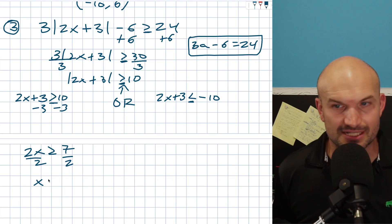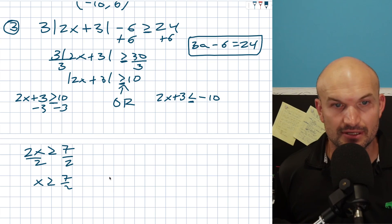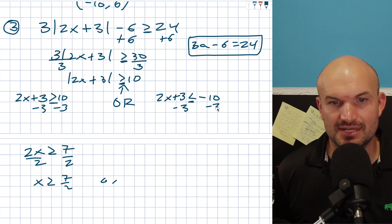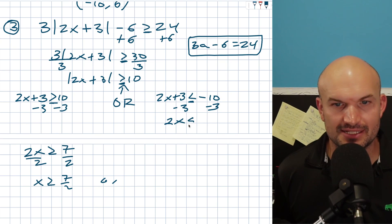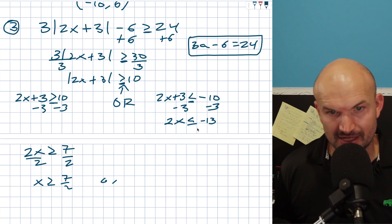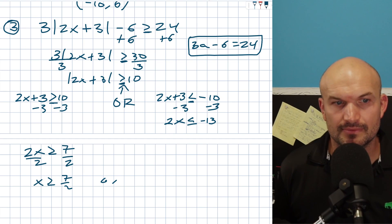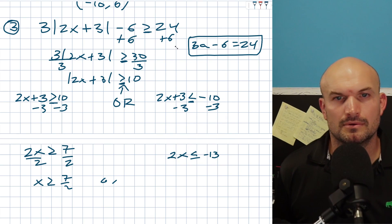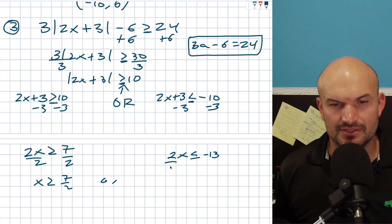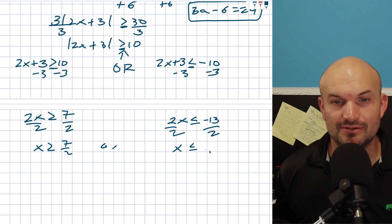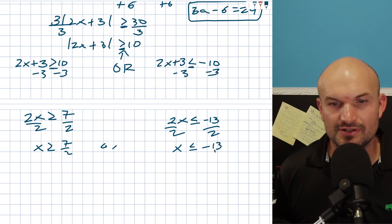X is going to be greater than or equal to seven halves. Now for the other side, subtract three on both sides: two X is going to be less than or equal to negative 10 minus three, which is negative 13. Divide by two on both sides and X is going to be less than or equal to negative 13 over two.